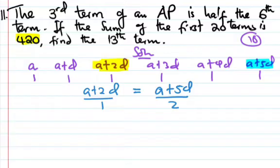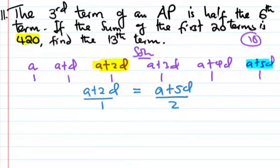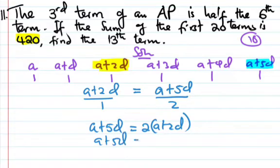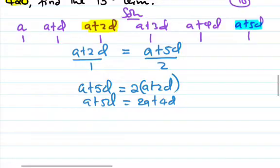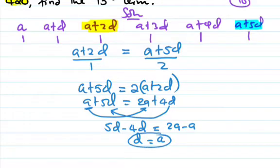According to the first part of the equation, we can do cross multiplication. Two times (A plus 5D) is equal to 2A plus 4D. So 5D minus 4D gives D and 2A minus A gives A. So we have A is equal to D.